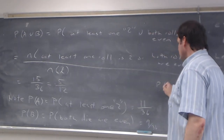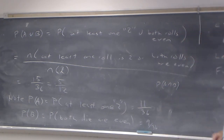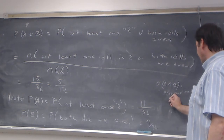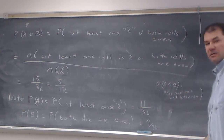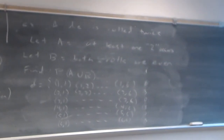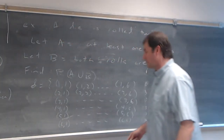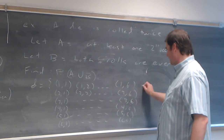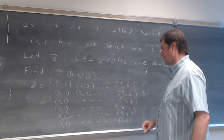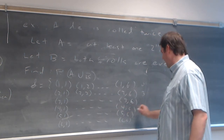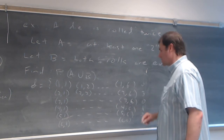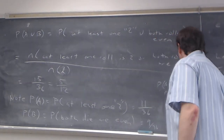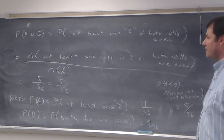Then the probability of A intersect B — at least one two and both even. Going back to the sample space: that doesn't happen in the first row. In the second row it happens three times: (2,2), (2,4), (2,6). Both even doesn't happen at all in the third row. It happens once at (4,2), none in the fifth, and once at (6,2). So that ends up being five times, giving P(A∩B) = 5/36.